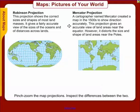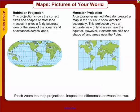You're also going to come across Mercator projections. This was a map that came around in the 1500s to show directions more accurately. It gives a more accurate view of the land areas near the equator, but it distorts them based on the size of their land near the poles — again, due to trying to make a flat map out of a round world.